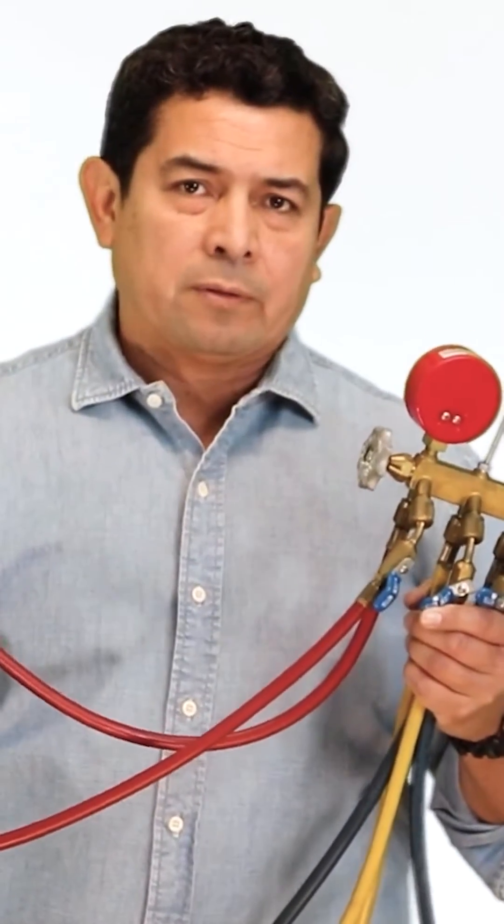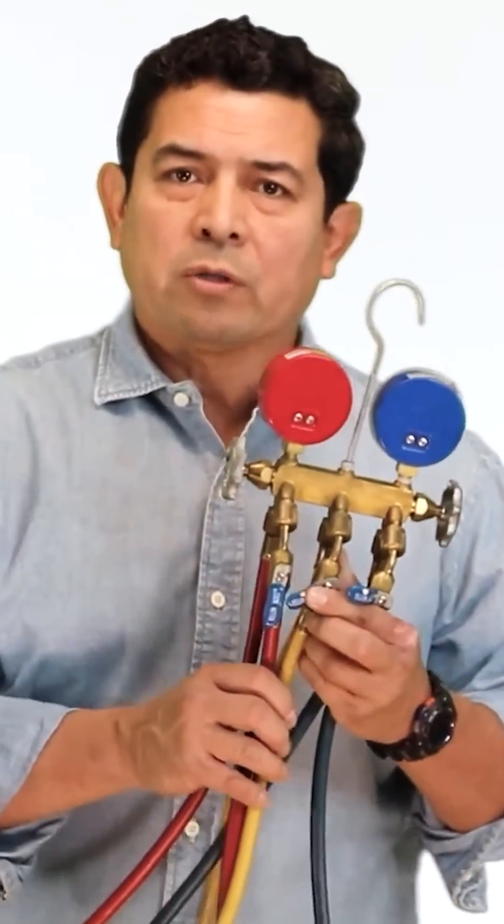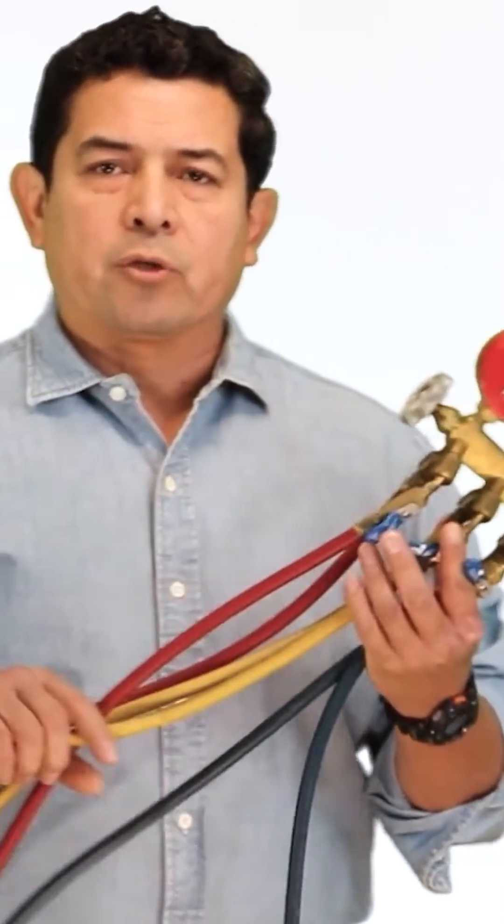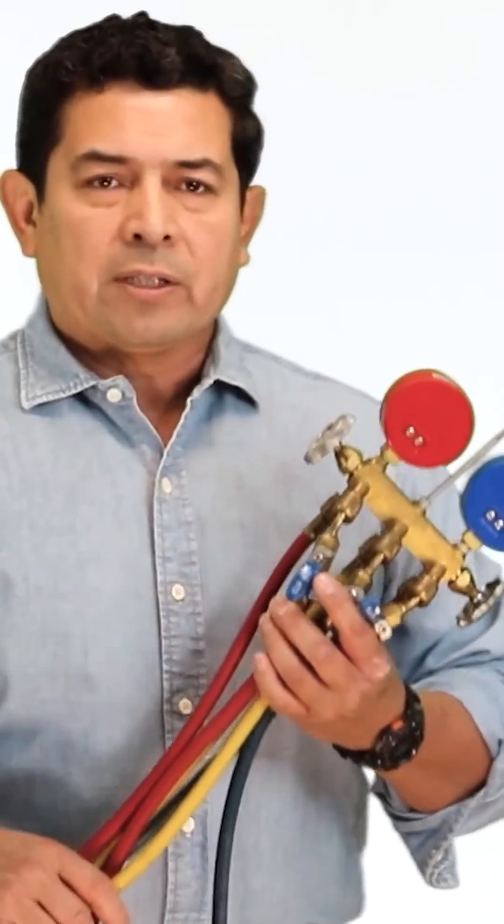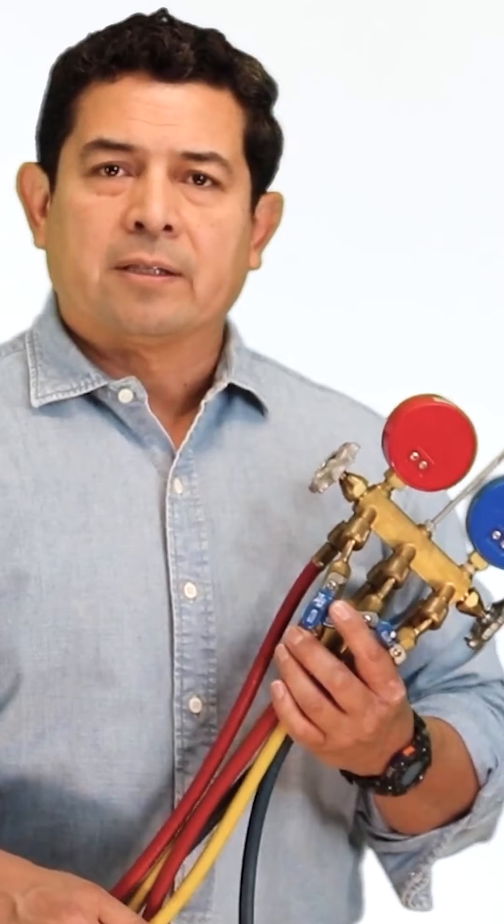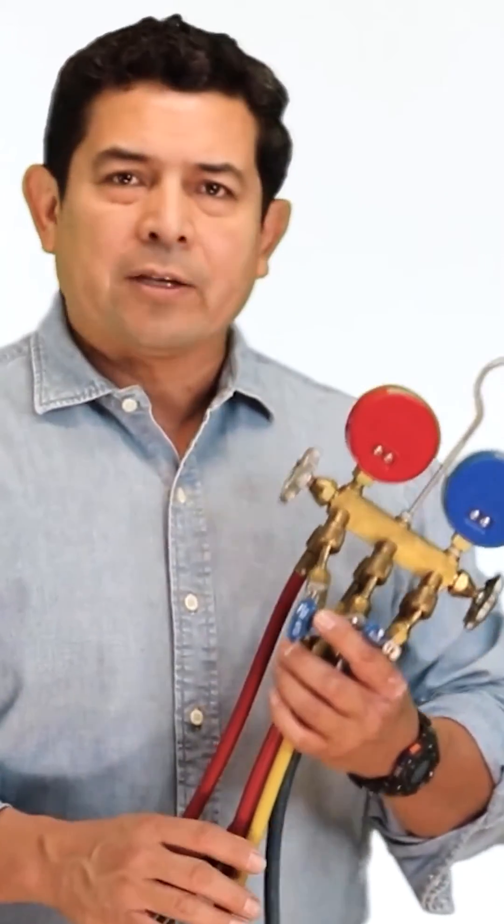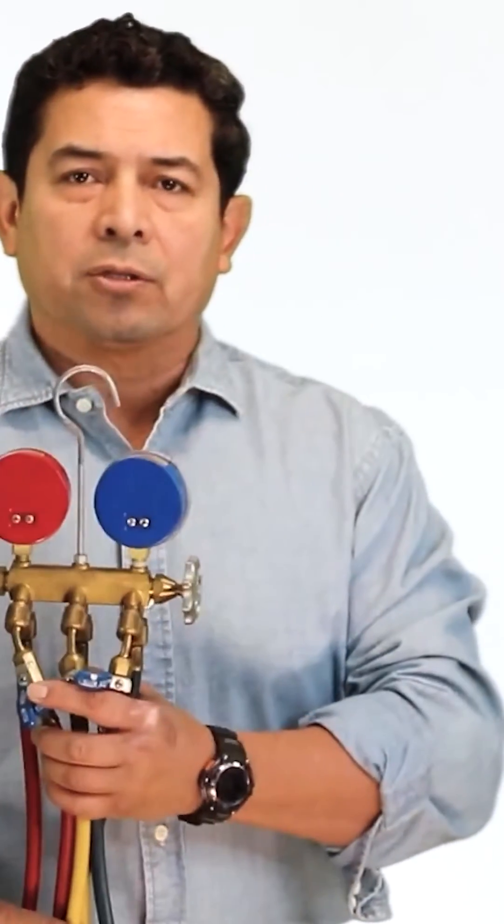You're supposed to recover the hoses. You're supposed to make sure that you have recovered all of the refrigerant out of your gauges and your recovery machine. But one suggestion I always make to all the guys in class is to go ahead and get yourself two or three sets of gauges.